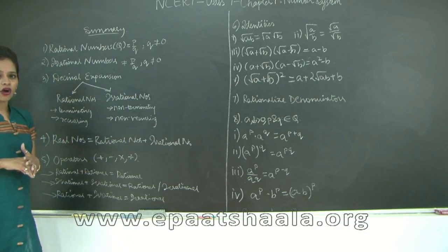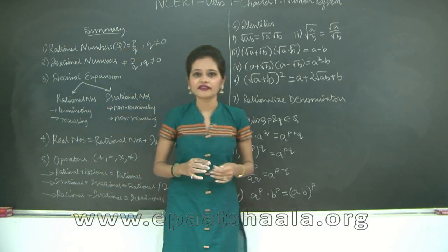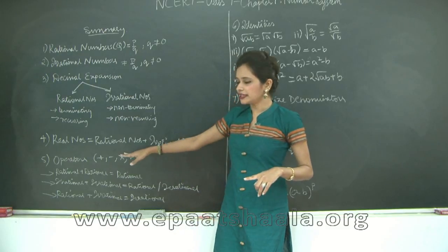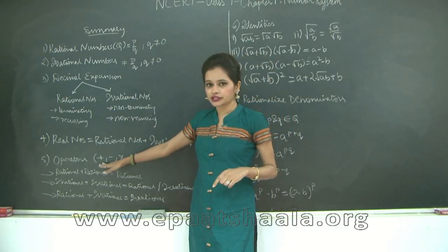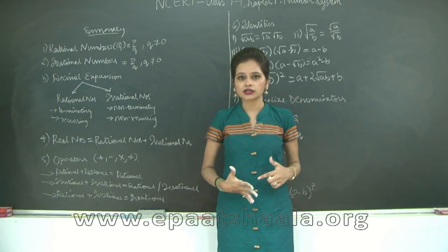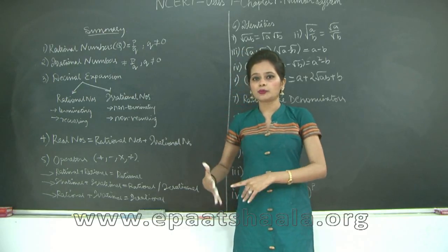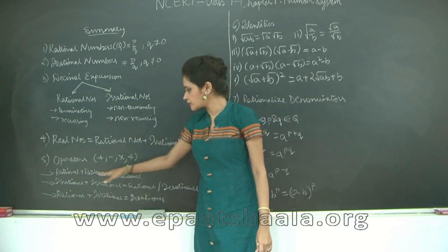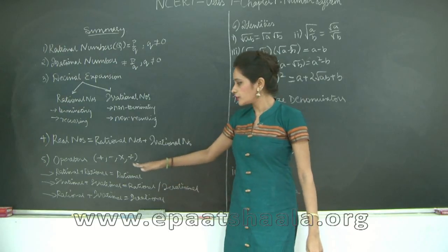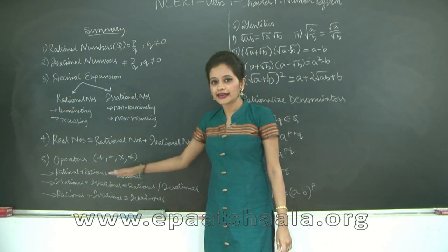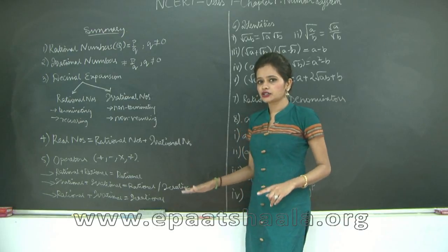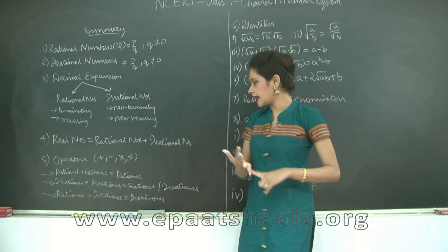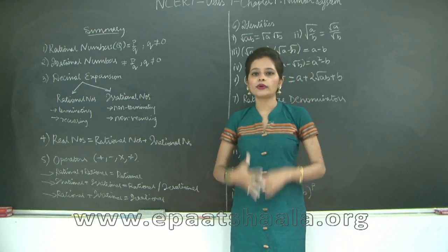Then we looked at operators. The different operators are subtraction, addition, multiplication, and division. When you perform these operations on rational and irrational numbers, you get different outputs. Two rational numbers always give a rational output. Two irrational numbers give either rational or irrational output. A combination of rational and irrational numbers always gives an irrational output.